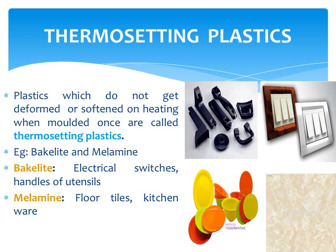Now let us see the uses of thermosetting plastics. First, bakelite: bakelite is a poor conductor of heat and electricity, so it is used for electrical switches and handles of various utensils. Next, melamine: melamine resists fire and can tolerate heat better than other plastics. It is used for making floor tiles, kitchenware, and fabrics which resist fire.